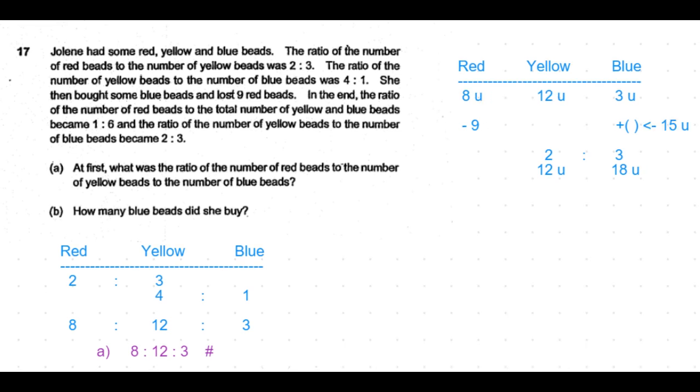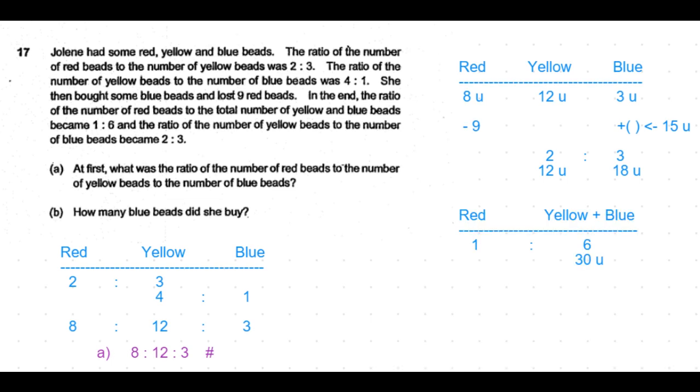Now let's look at the ratio between the red beads and yellow and blue beads together. This is 1:6. We know that yellow and blue beads together now is 12 units plus 18 units which is equal to 30 units. 30 units corresponds to 6.